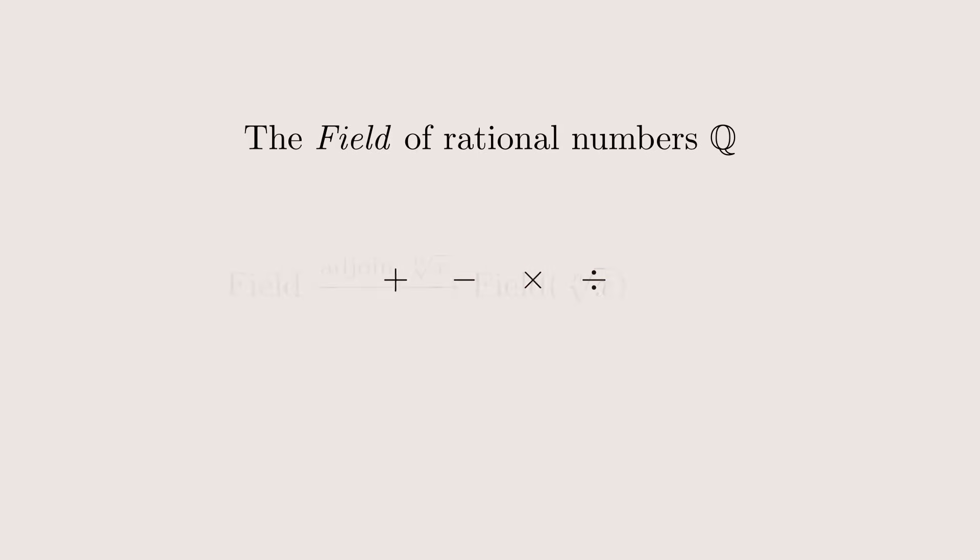We now allow ourselves to extend a field with an nth root of some value that's already in the field. Extending the rational numbers with the square root of two gives us a new field that not only contains all rational numbers and the square root of two, three plus the square root of two, three minus the square root of two, and other values like seven times the square root of two, or the square root of two divided by one plus the square root of two.